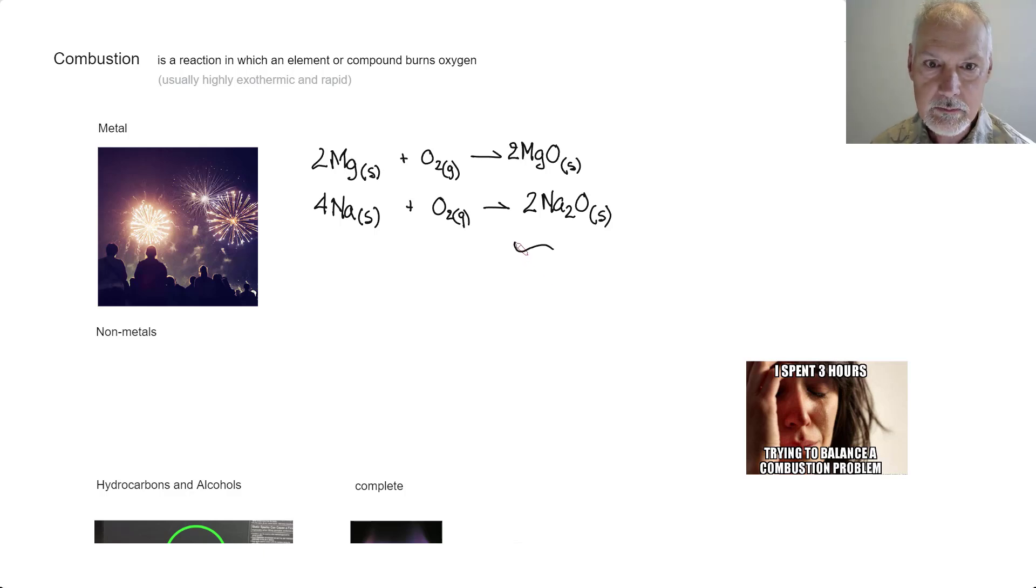You might recall from earlier units that these oxides, when mixed with water, produce bases. Generally speaking, if you want a highly exothermic rapid process, you tend to use metals from groups one and group two.